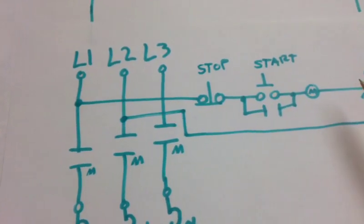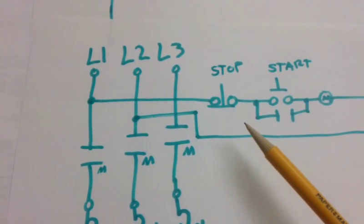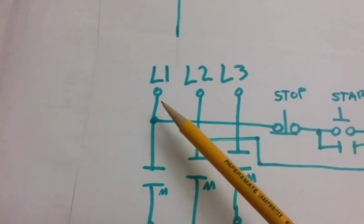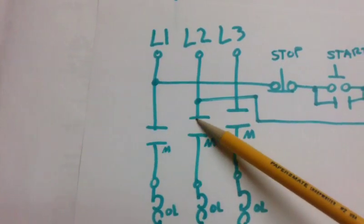which is line one, line two, line three. From there we go to our contacts, these are contactors on the max starter, and then we go to our overload relay.